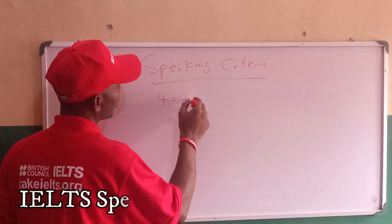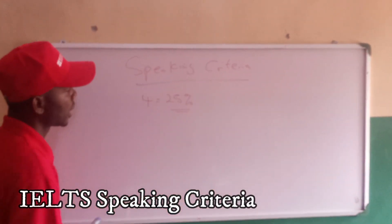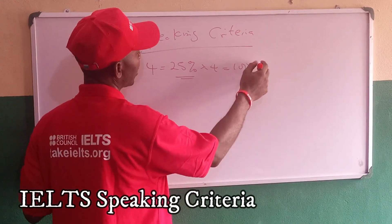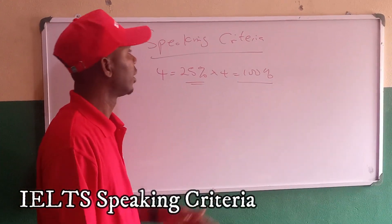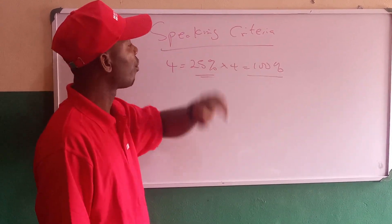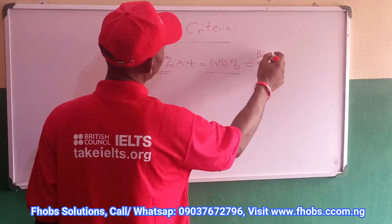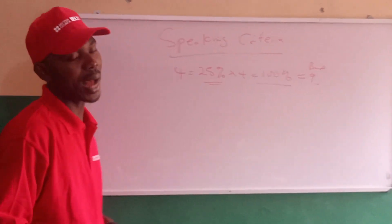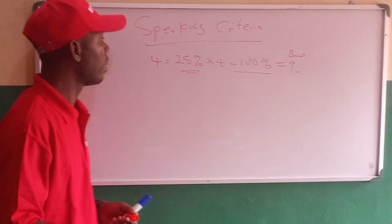The IELTS speaking score is actually divided into four criteria, with each of them being 25%. So obviously, if you do the simple mathematics, it's 100%. So that means if you are able to do well in each and all the speaking criteria, you are short of your 100% mark, which is what is called Band 9. So you are going to pay full attention to the speaking criteria we are going to mention.